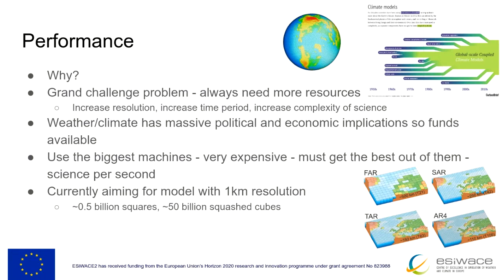Because of this, there tends to be money available to buy big machines. We can use these largest, very expensive machines. Another reason performance matters is that because they're so expensive, we want to get the best out of them. The fundamental thing is we want science per second — not megaflops or gigaflops or teraflops, but ultimately science per second is the most important metric.